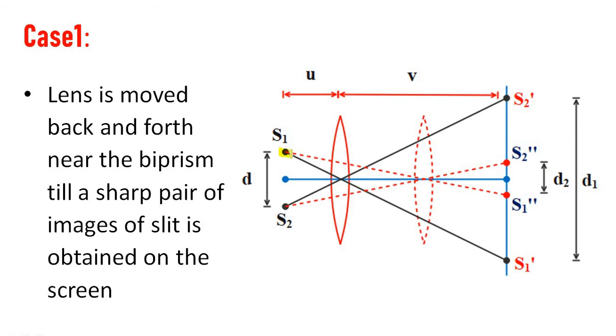S1 and S2 give clear images as S1 prime and S2 prime. The distance of separation between S1 and S2 is D. The distance of separation between the images S1 prime and S2 prime is D1.